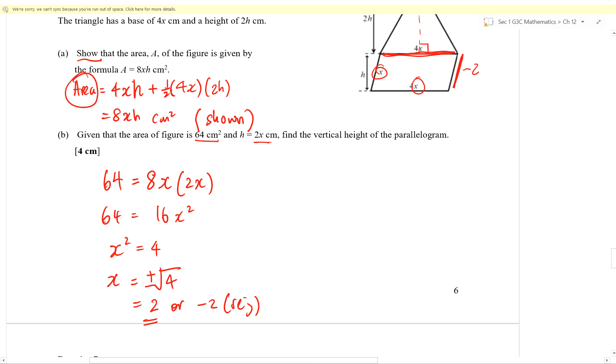Which means that I only have one value of X. Is that what the question wants? No, that's not what they want. They want the vertical height of the parallelogram. They do not want X. X is the slant height. This is the slant height. The perpendicular height, H, is going to be equal to 2X, which is 4 centimeters.